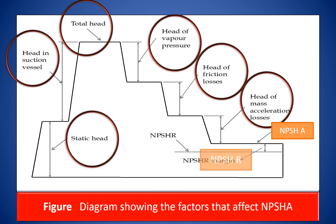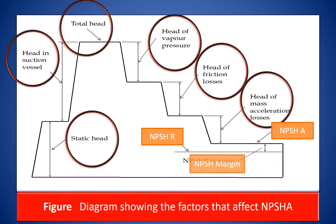As the liquid passes from the pump suction to the eye of the impeller, velocity increases and pressure decreases. There are also pressure losses due to shock and turbulence. As the liquid strikes the impeller, the centrifugal force of the impeller vanes further increases the velocity and decreases the pressure. Broadly, there are two kinds of losses: one, friction losses; and two, losses due to acceleration. The NPSH required is the positive head in meters of liquid available at the pump suction to overcome these pressure losses and keep the liquid above vapor pressure.